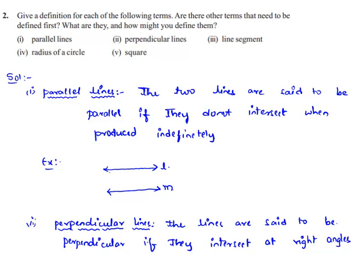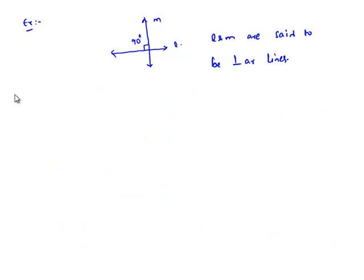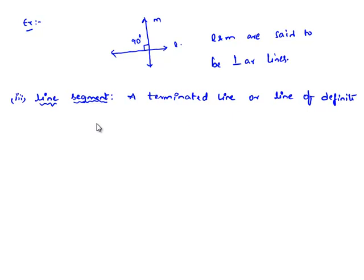Now in the third part, the definition of line segment. A terminated line, or line of definite length, is known as a line segment.